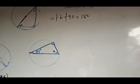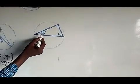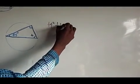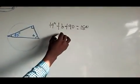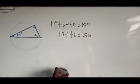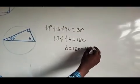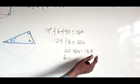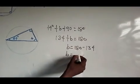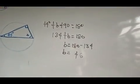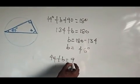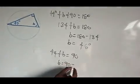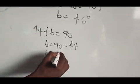Let's see an example. The angle given is 44 degrees, and I need to find angle B. One way: 44 plus B plus 90 equals 180. So 90 plus 44 gives 134, then B equals 180 minus 134, which gives B equals 46 degrees. The other way: 44 plus B equals 90, so B equals 90 minus 44, which also gives B equals 46 degrees.